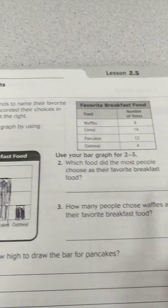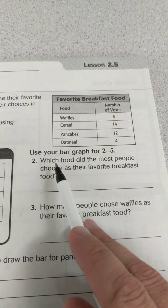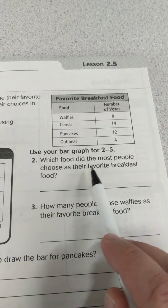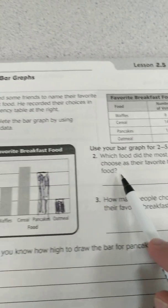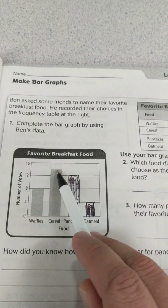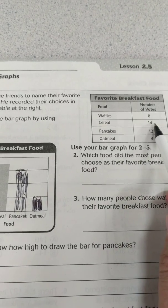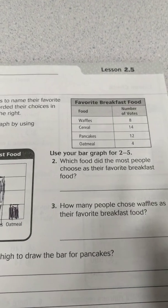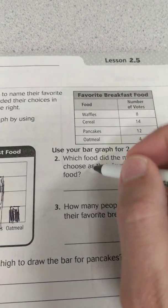Looking at number two: which food did the most people choose as their favorite breakfast food? You can simply look at the bars without even looking at the numbers and you know it's cereal. We can also look at the frequency table and see that cereal had 14 votes, so we write cereal.